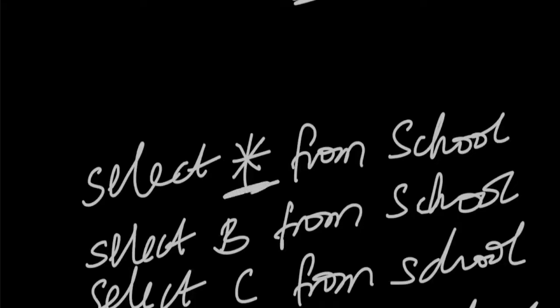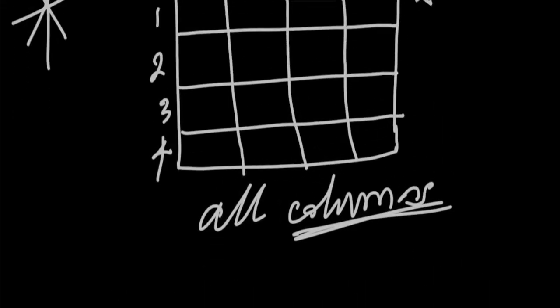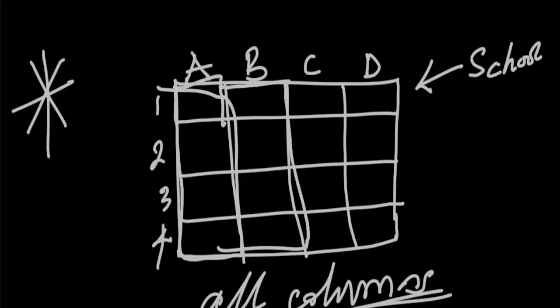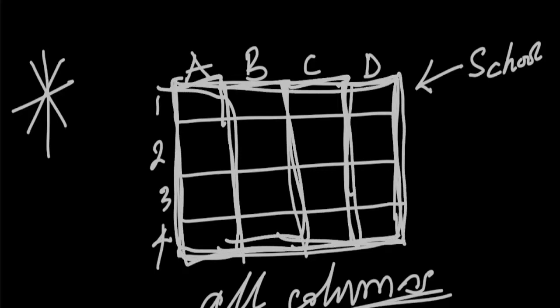But what if you are interested in the rows? If you are selecting all the columns, each column will be selected. At the end of the day, indirectly, you are still selecting all the rows along with all the columns. That means you are taking all the columns and all the rows.